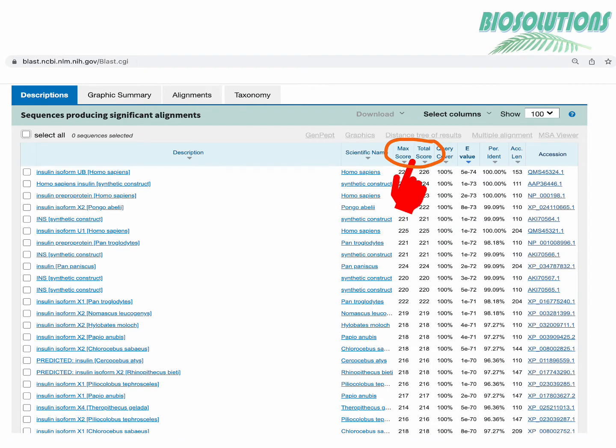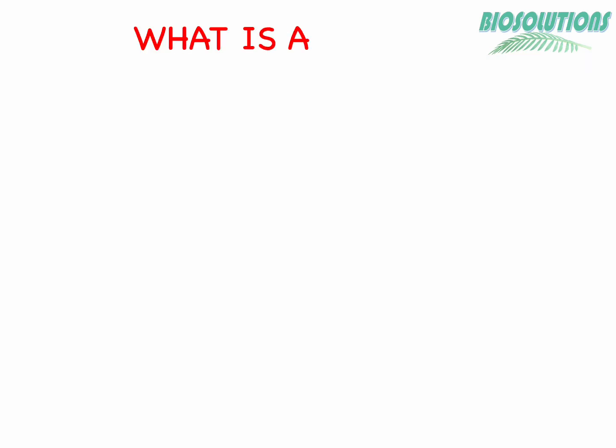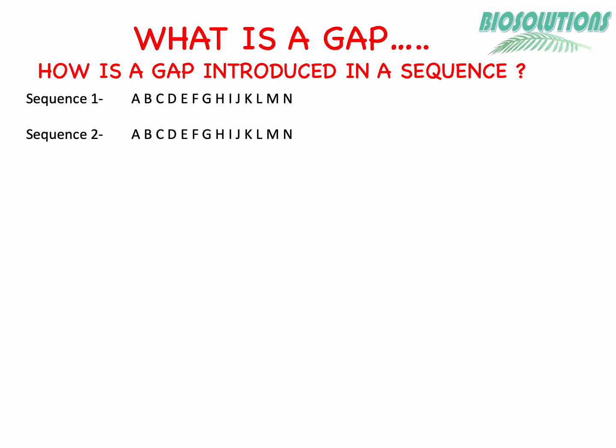Although in the BLAST results table max score and total scores are given, to understand what is a gap, how gap scores are calculated using a formula, and how max and total scores are calculated by BLAST is what we are going to learn in this video with the help of examples.